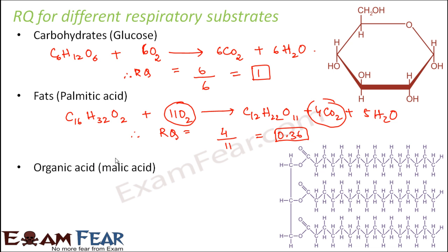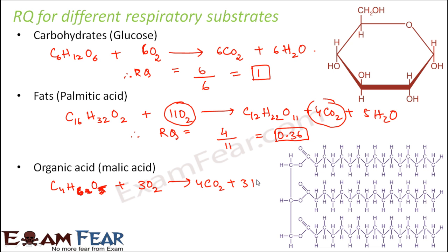If we talk about other organic acids like malic acid, the respiratory quotient is quite high — in some organic acids it can go up to 4 or 5. Malic acid is C₄H₆O₅. When this is oxidized, it forms 4CO₂ plus 3H₂O. So the respiratory quotient in this case is 4 divided by 3, which equals 1.33.